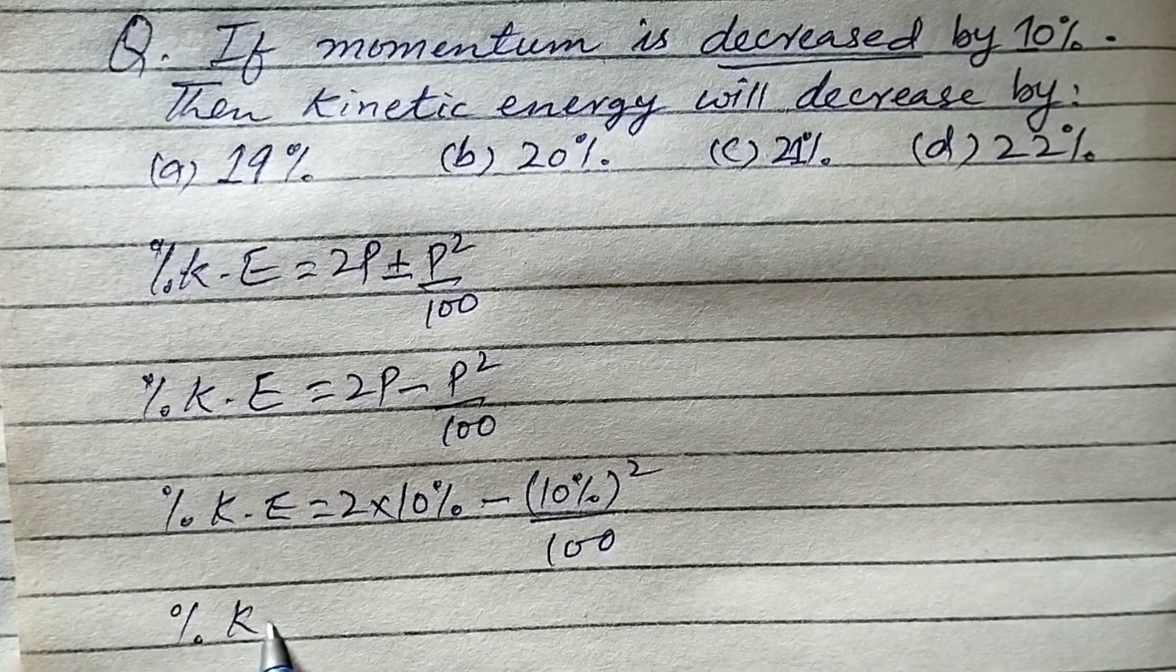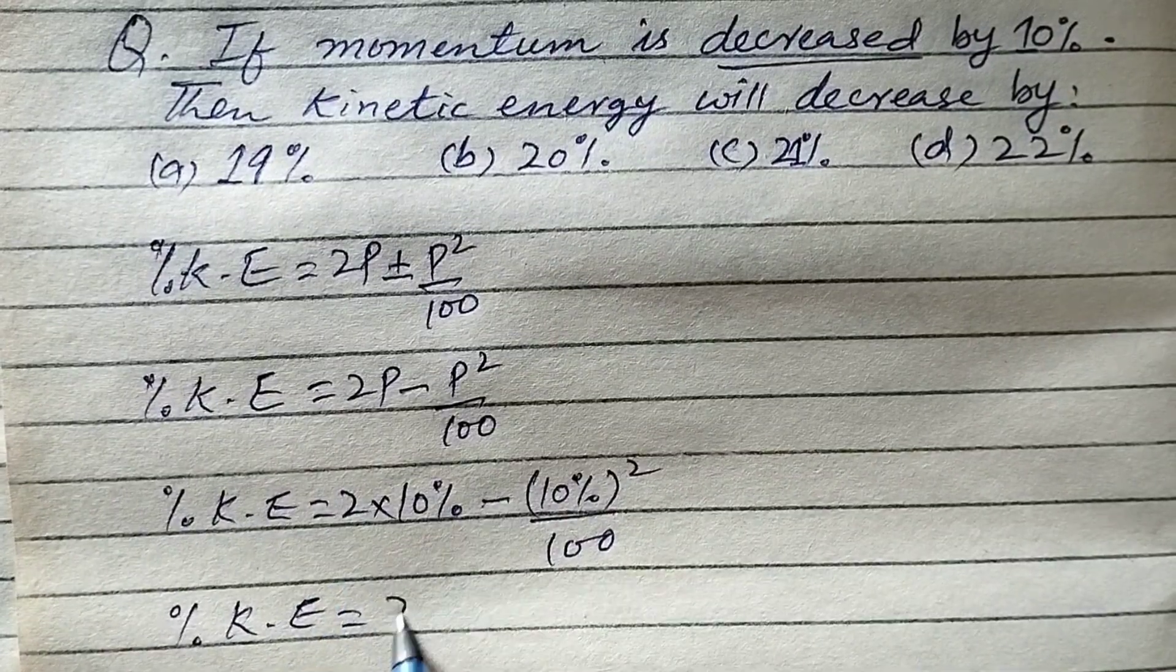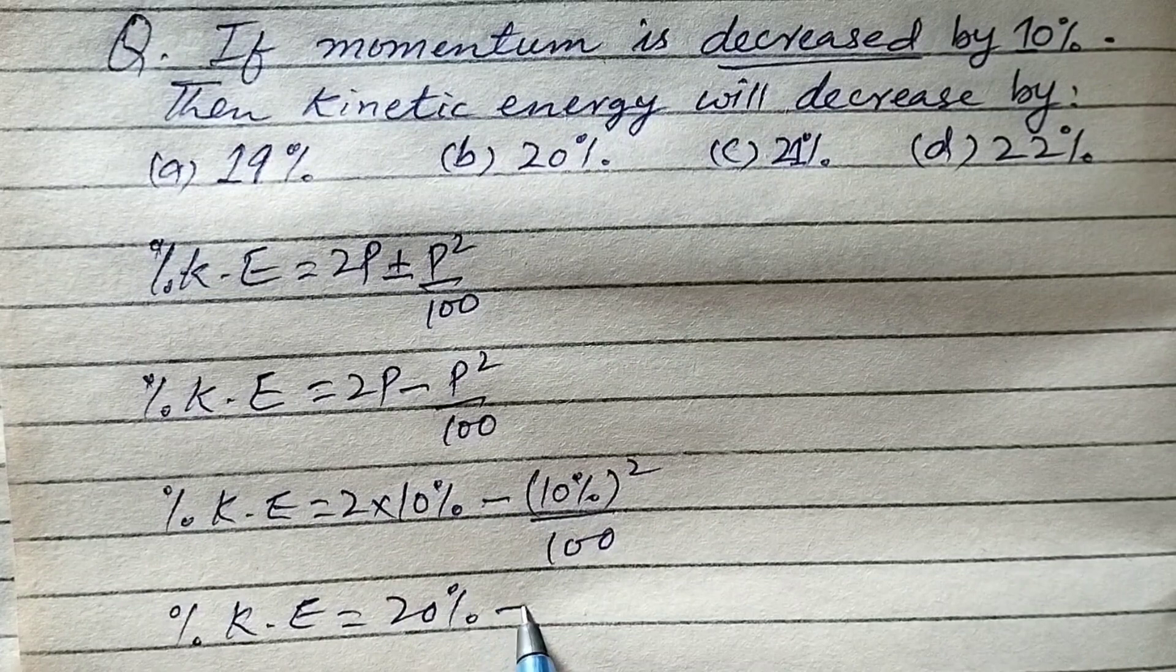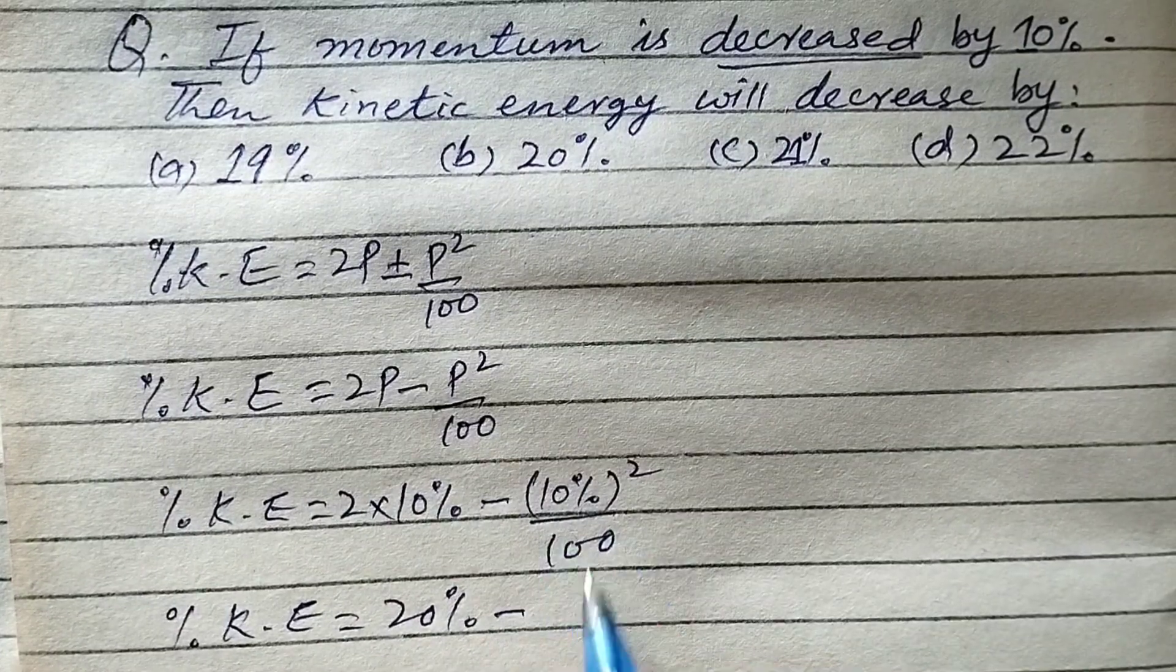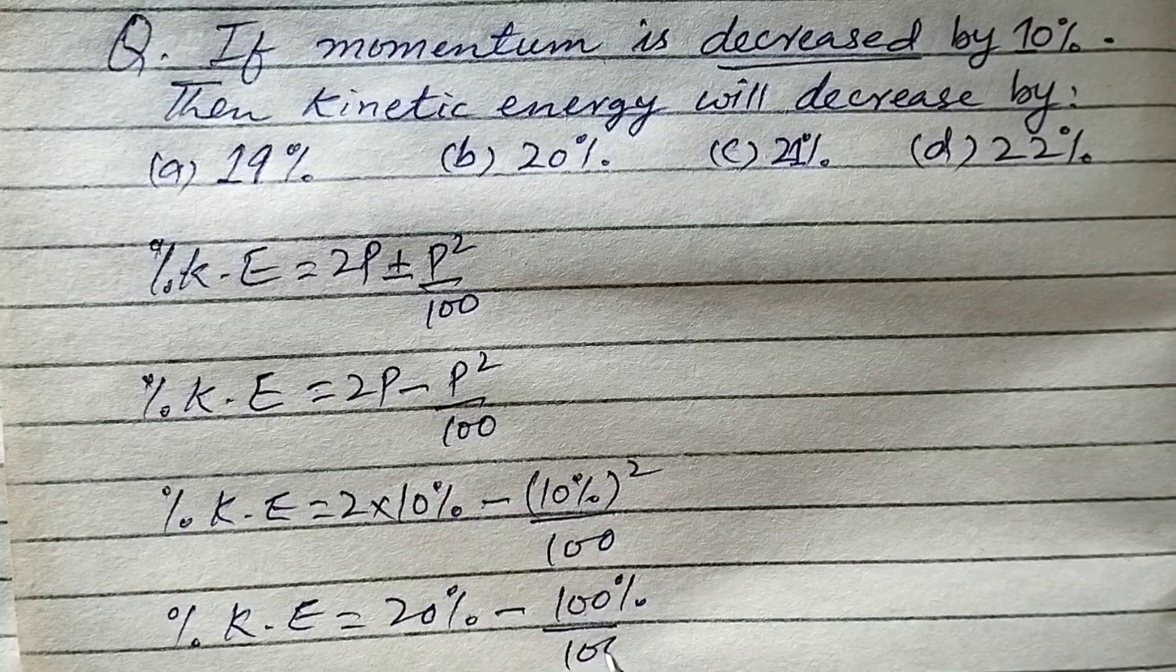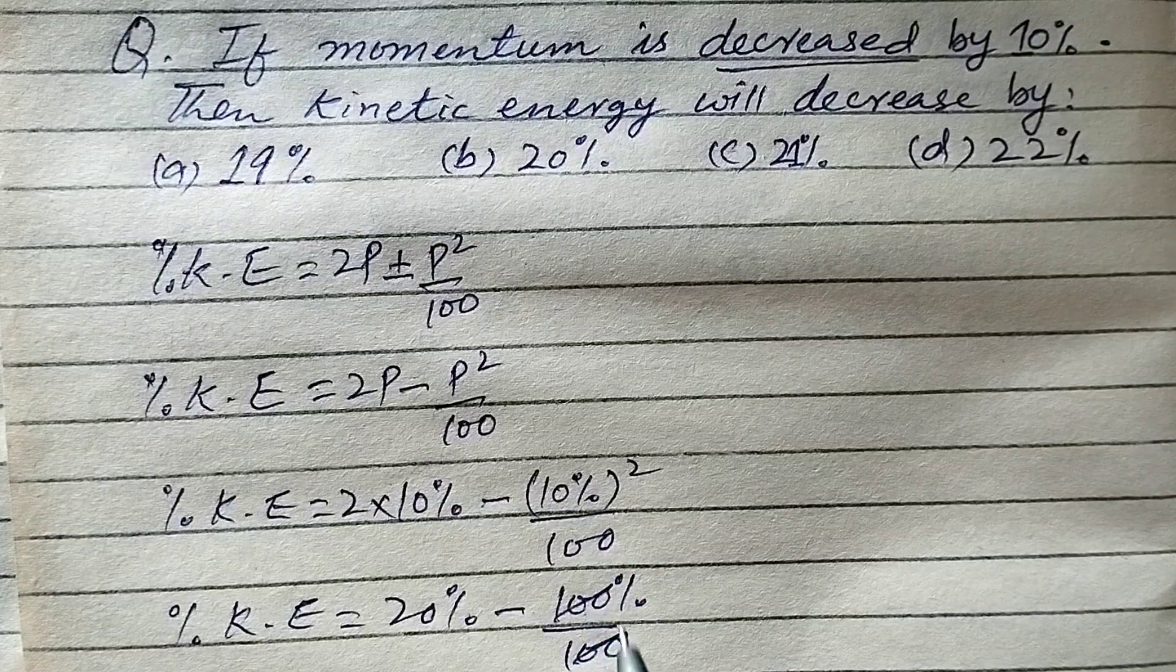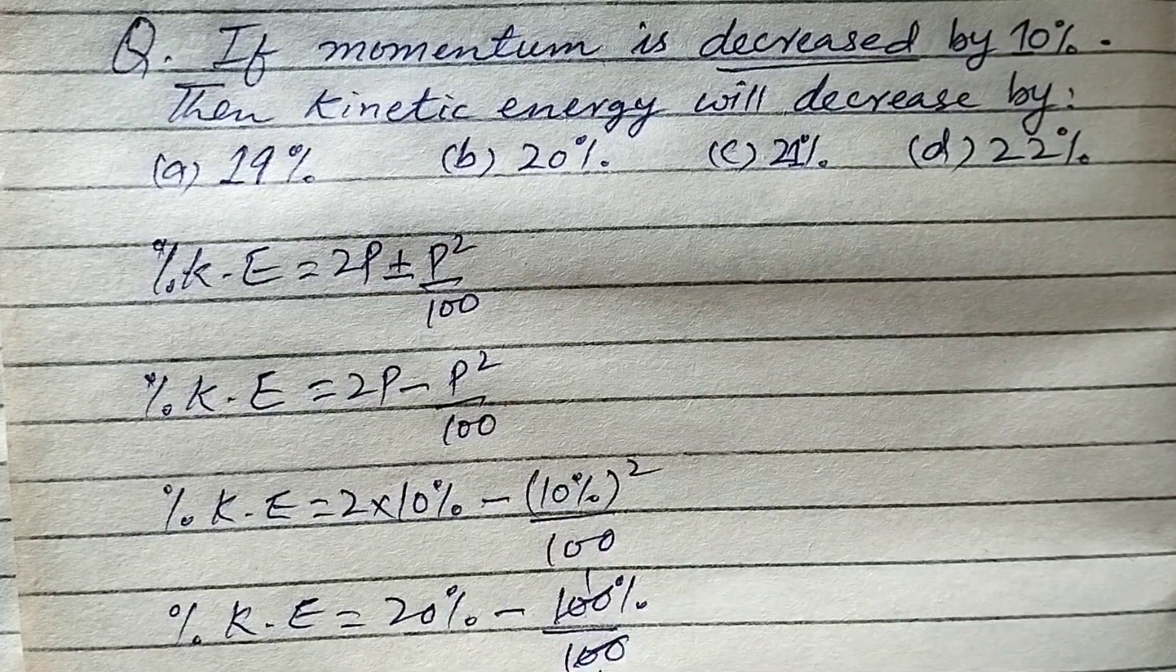So percentage decrease in kinetic energy will be equal to 2 into 10 percent, which will be 20 percent, minus the square of 10 percent is 100 percent, divided by 100. 100 and 100 will get cancelled, means 100 divided by 100 is 1 times.